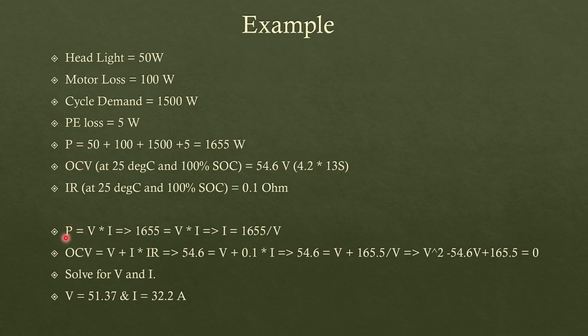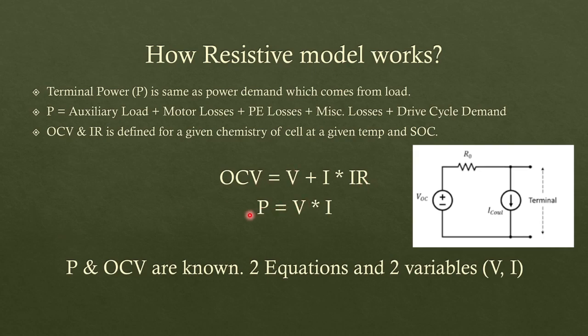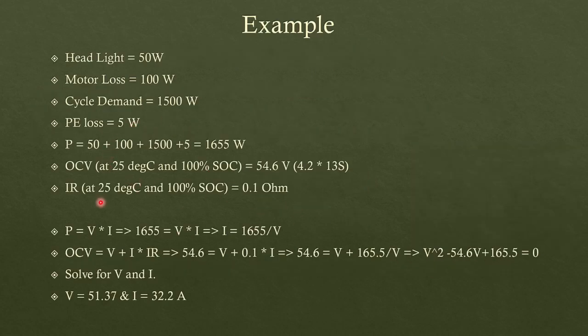So we have those two equations from the previous slide: OCV equals V plus IR, P equals VI. We'll plug in the values. P equals VI, 1655, P is known, so you can relate and get I equals 1655 by V. The second equation, OCV equals V plus I times IR. Sometimes resistance is also denoted as R, it can also be used as IR, so it's interchangeable. So you have OCV equals V plus I times IR. We know OCV, we know IR at the given operating points, so we'll plug in those values.